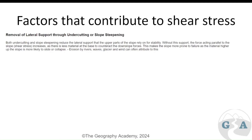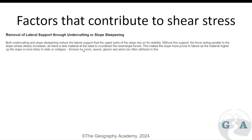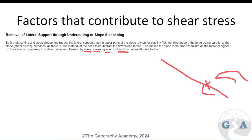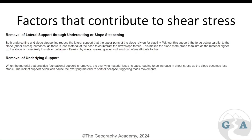What adds shear stress to a slope? Lateral removal or undercutting can be done by people when building roads through sloped areas, but it is often a natural process. Natural agents include rivers, waves, glaciers, and wind, which cause erosion along the side of a slope. For example, waves eroding the base of a slope may remove the bottom support, leaving the rest vulnerable to sliding down. All these erosional forces remove lateral support.